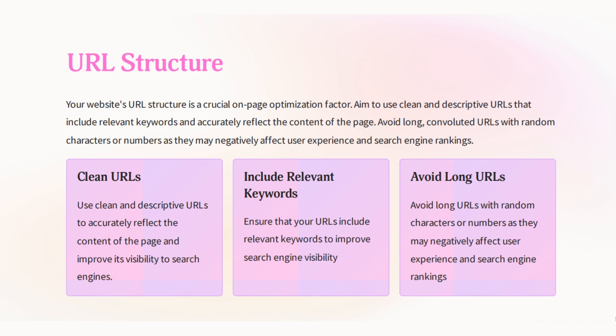Another crucial on-page optimization factor is URL structure. It's really important to have the end of your website's URL titled with the keyword phrase — www.website.com/keyword-phrase. That is on-page optimization, meaning that's the title of your page. Use clean, descriptive URLs that include a relevant keyword and reflect the content on the page. The keyword phrase should be the title, the headings, and the alt text for images. Don't use long, cryptic URLs with random characters and numbers — those will negatively impact user experience and search engine ranking.